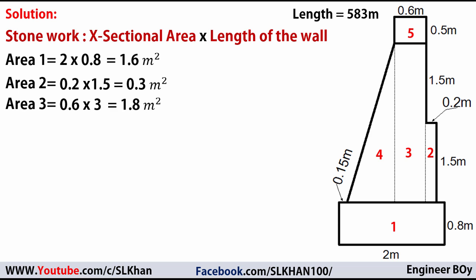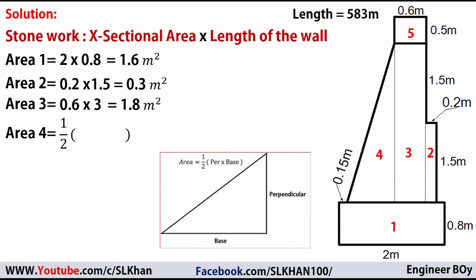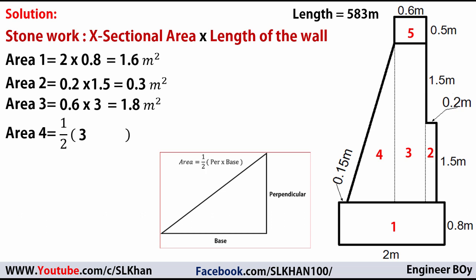Shape 4 is a right-angle triangle, so its area is one-half times its base times its depth. The depth is 3 meters, since it is 1.5 plus 1.5 — the same depth as shape 3.